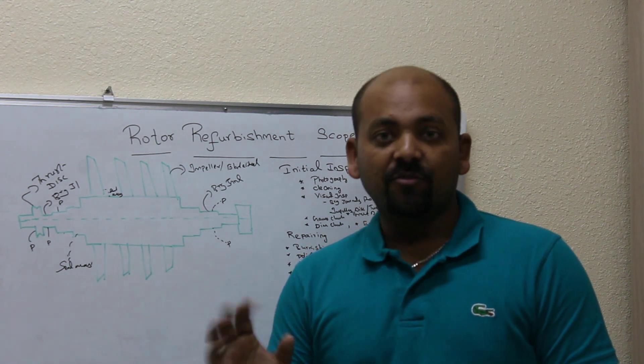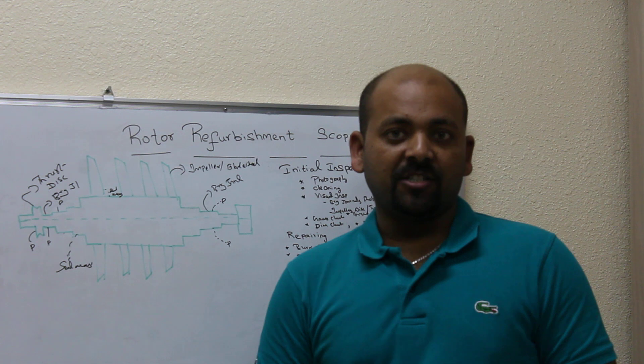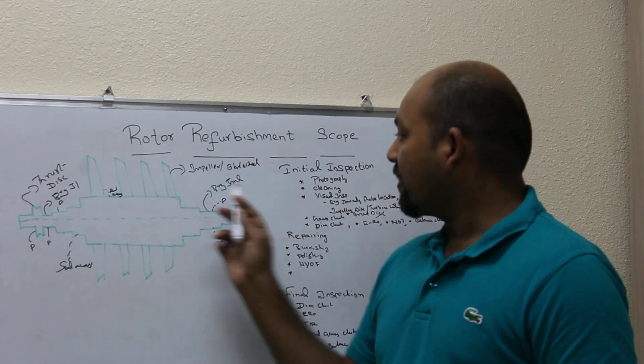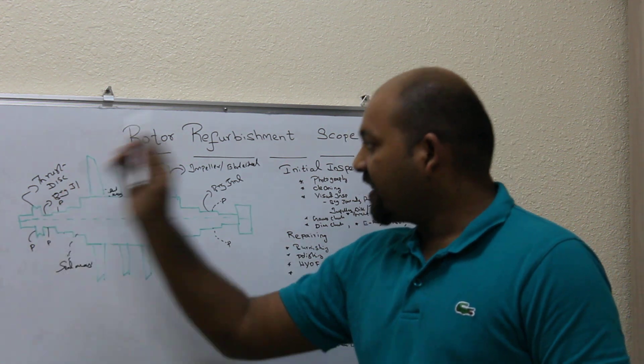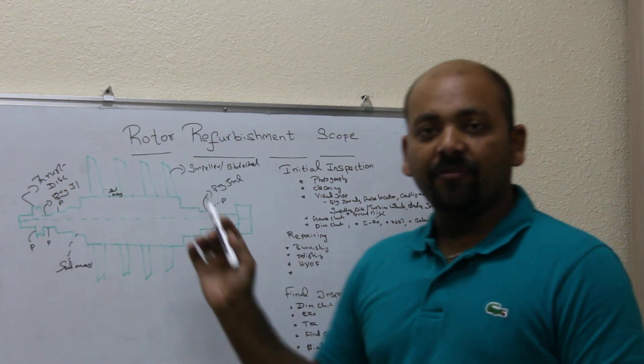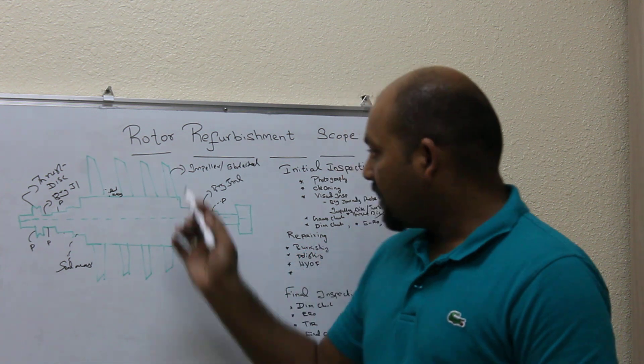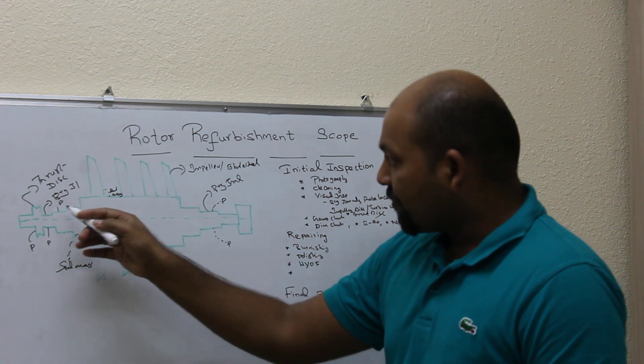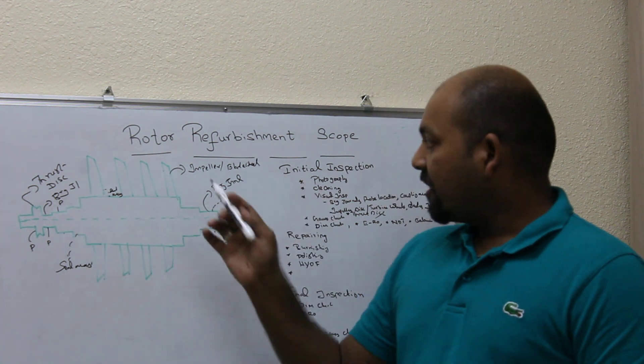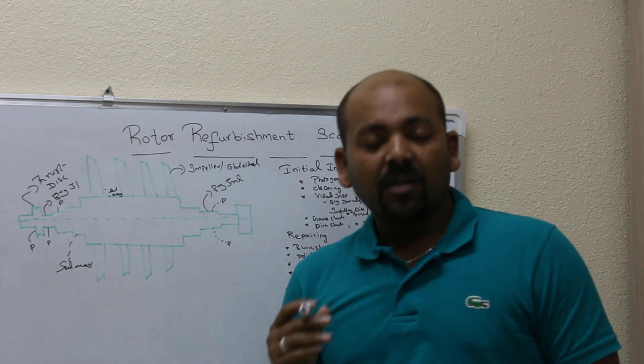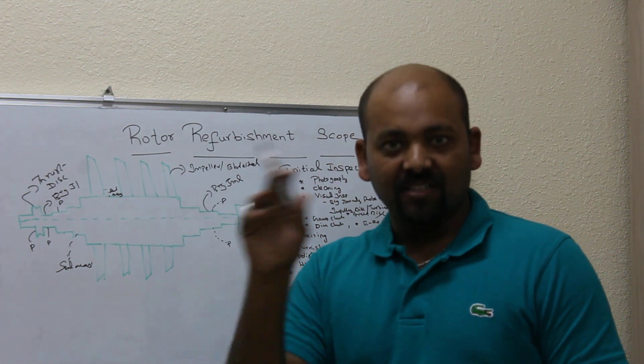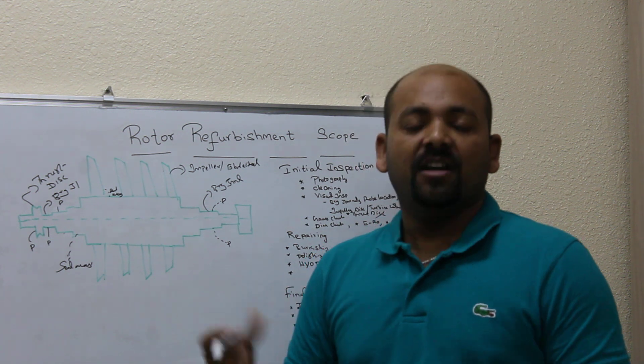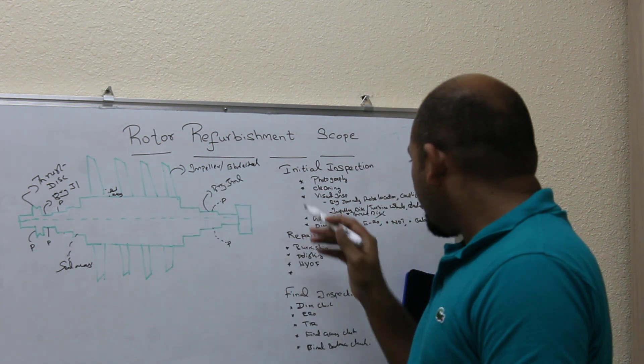The third in the initial inspection is visual inspection. Visual inspections are normally done in the bearing journal areas, probe areas, thrust disc areas, the impellers if it's a multi-stage compressor rotor, impeller discs, impeller seal sides, and rotor seal areas. If it's a steam turbine rotor, you need to analyze all the blades of turbine wheels for any dents or bends.